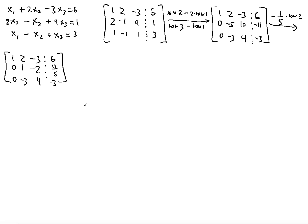Now this is where the Gauss-Jordan part comes in. In Gaussian elimination, you only make sure the entry below the leading 1 becomes zero. But in Gauss-Jordan elimination, you must also make the entry above the leading 1 zero. So we need two operations. Row 1 minus 2 times row 2 — that makes 2 minus 2 times 1 equal to 0. Row 3 plus 3 times row 2 — because negative 3 plus 3 gives 0.